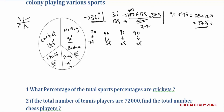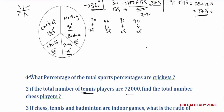Question 2: If the total number of tennis players are 72,000, find the total number of chess players. Using the chain rule: tennis is 45 degrees and has 72,000 players. Chess players have 60 degrees. So, 72,000 into 60 divided by 45 gives us 96,000. Chess players total 96,000.